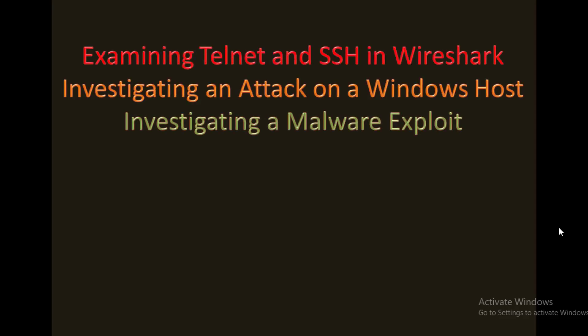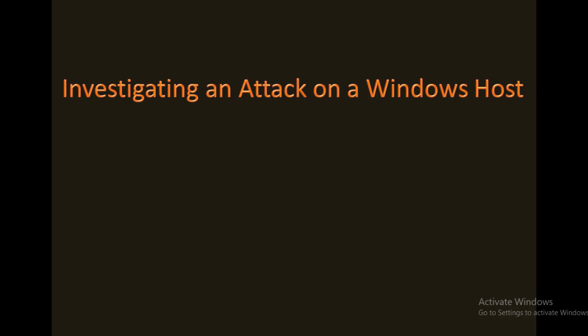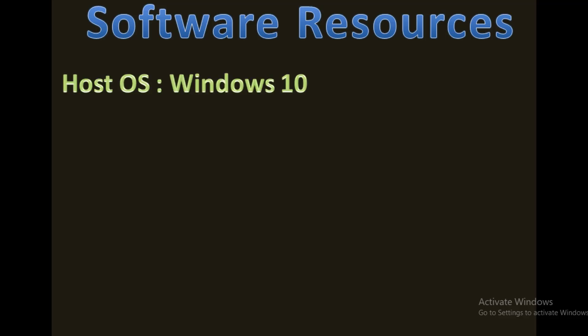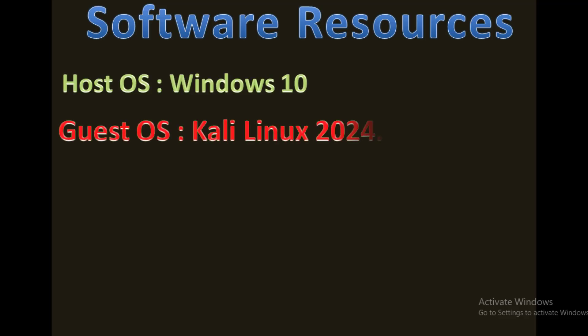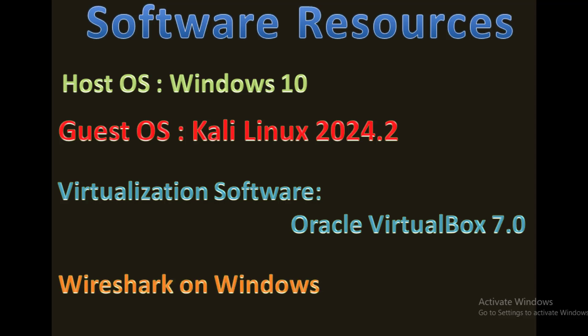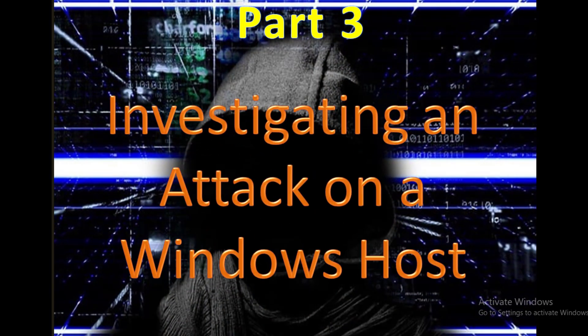Hello everyone, welcome to the Security Center Practical Series. This is a continuation — we've already covered two parts: examining Telnet and SSH in Wireshark, and investigating a malware exploit. Today we study investigating an attack on a Windows host. The software resources are: host OS Windows 10, guest OS Kali Linux, virtualization software Oracle VirtualBox 7.0, and Wireshark on Windows. This is Part 3.